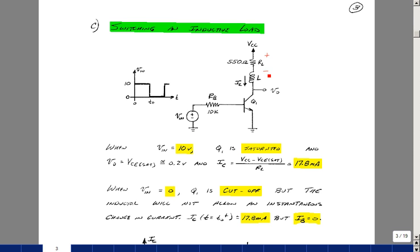The current in the collector would be the current in this 550 ohm resistor, which would be vcc minus the drop across the inductor, which is 0 in steady state, plus vcesat.